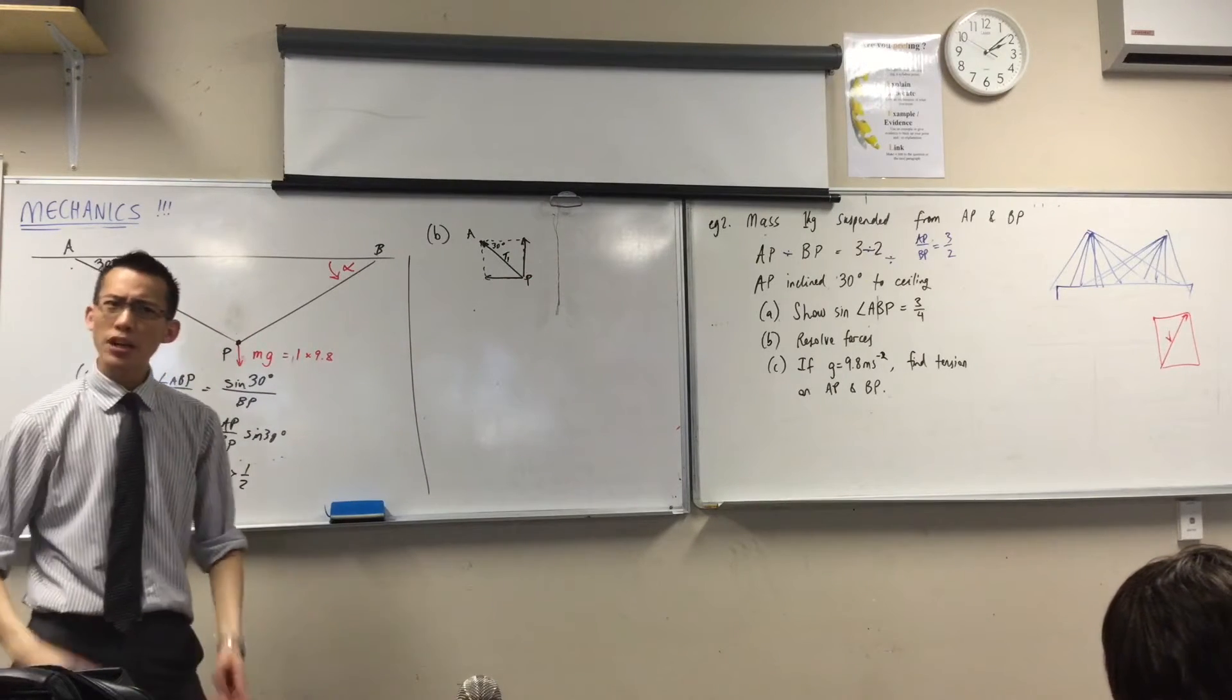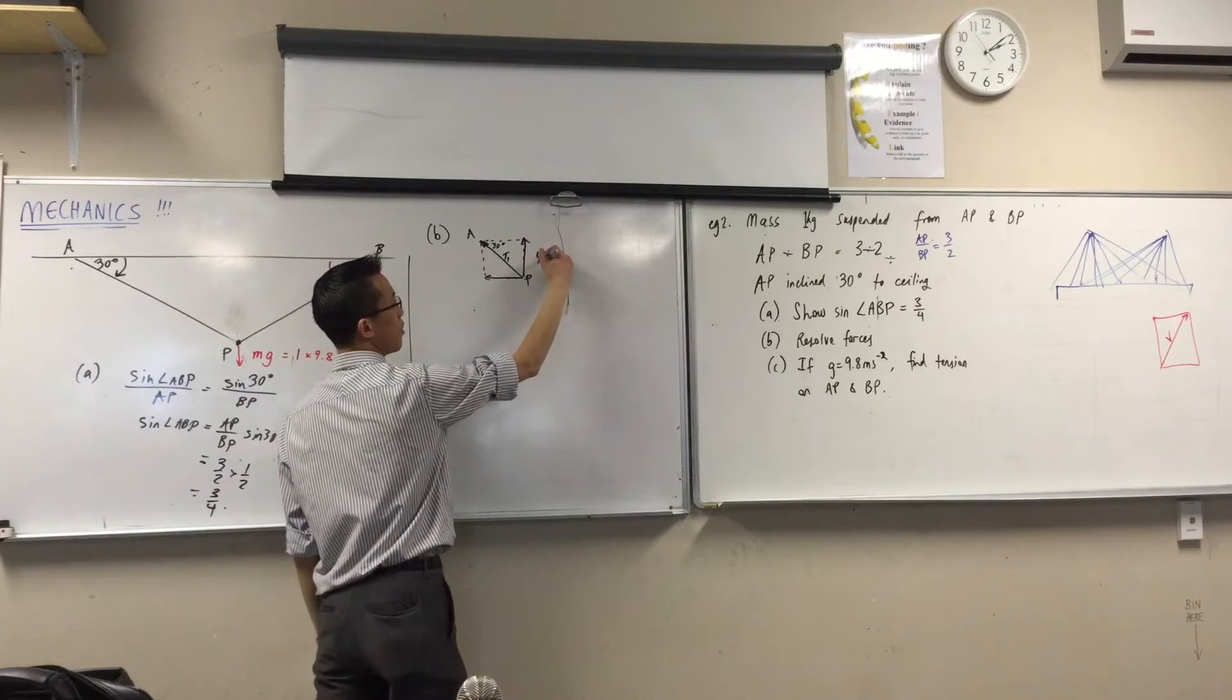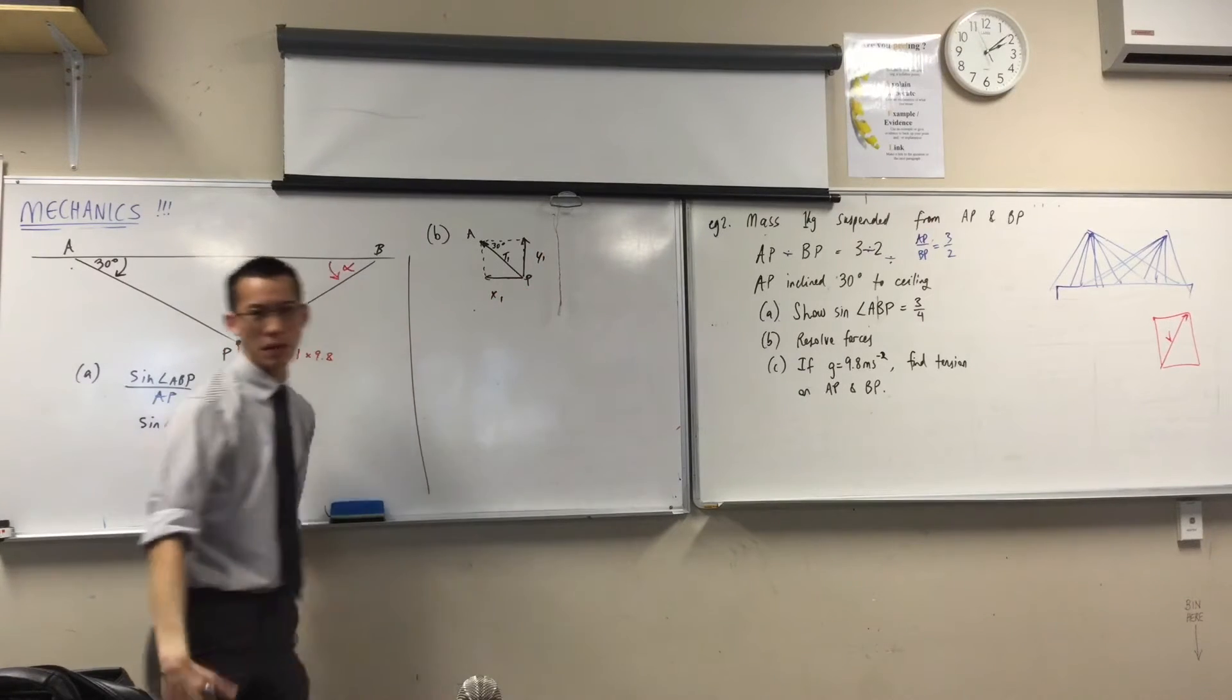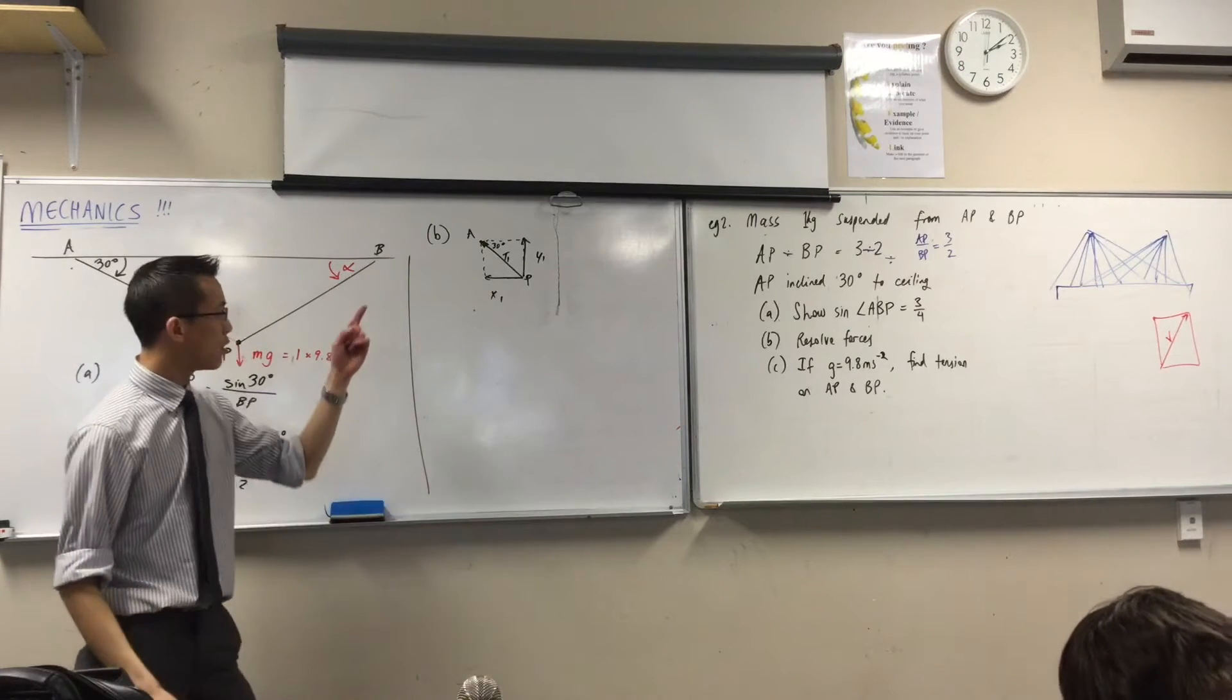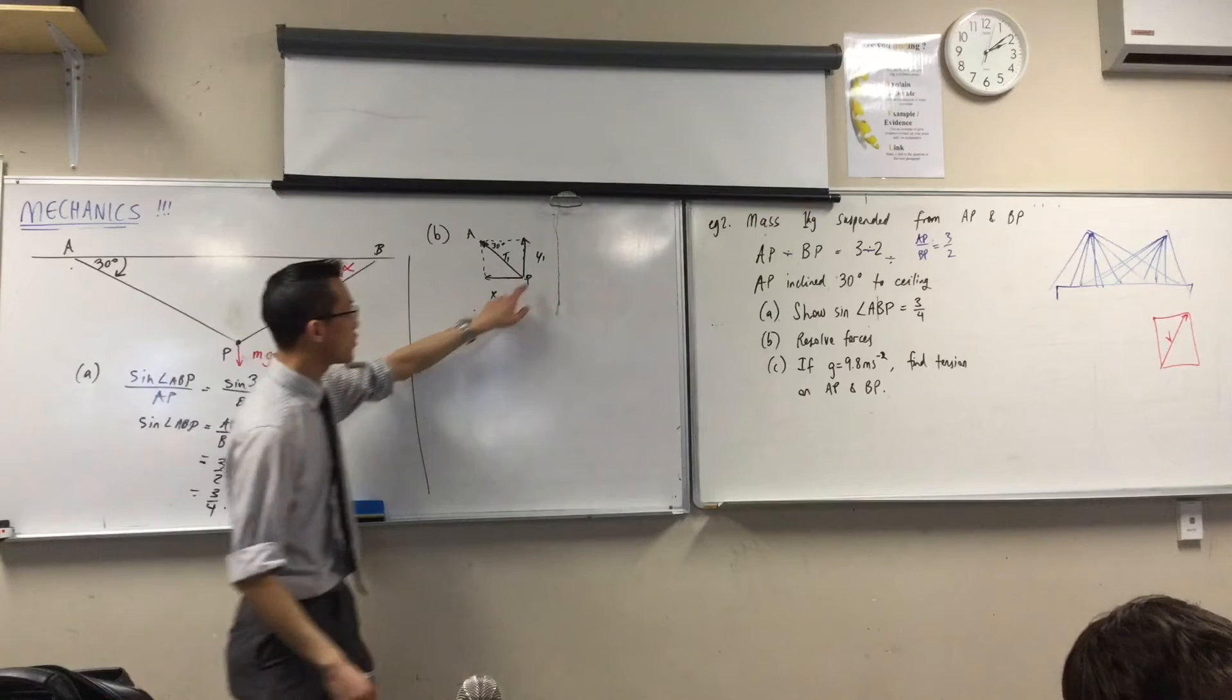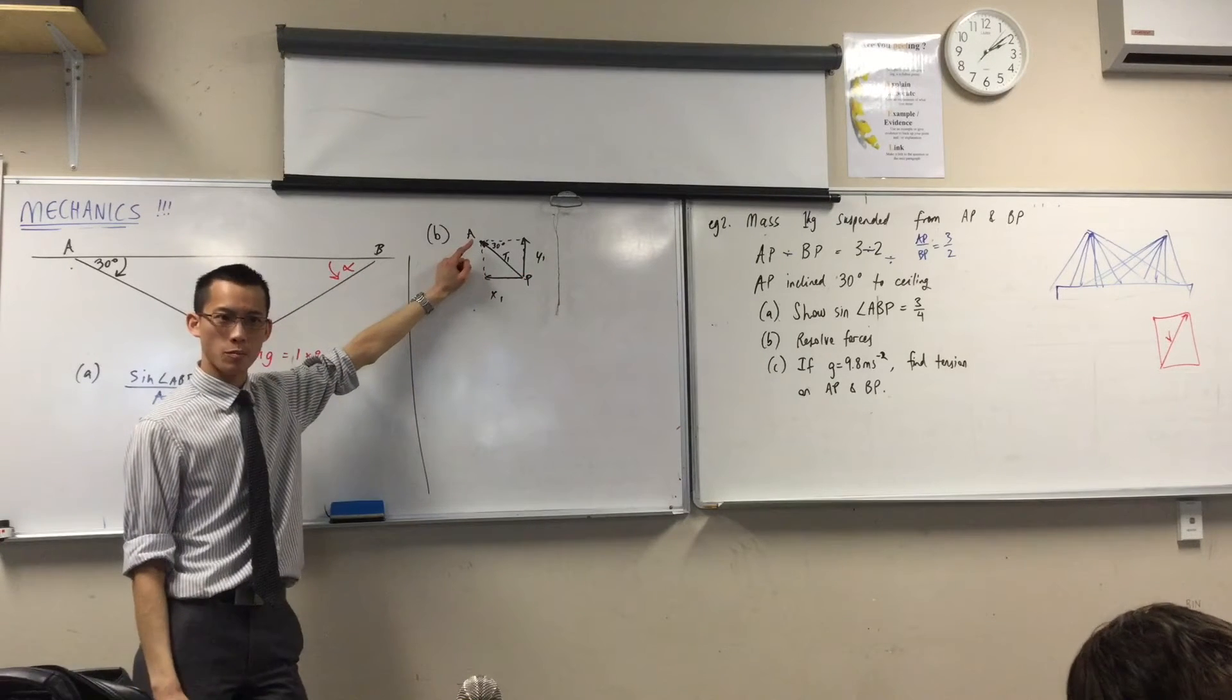I'm going to have a horizontal component and a vertical component, so I'm going to call them Y and X. But I'm going to have another one, so I'm going to call X1 and Y1. So how am I going to work out what each of these parts is, knowing that that's 30 degrees? What am I going to do?